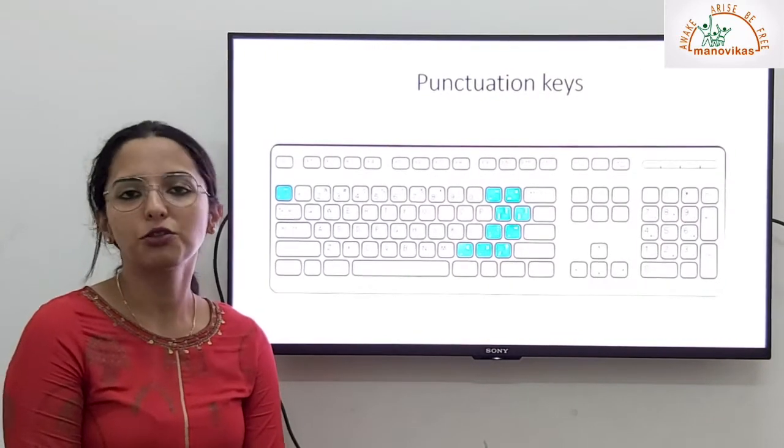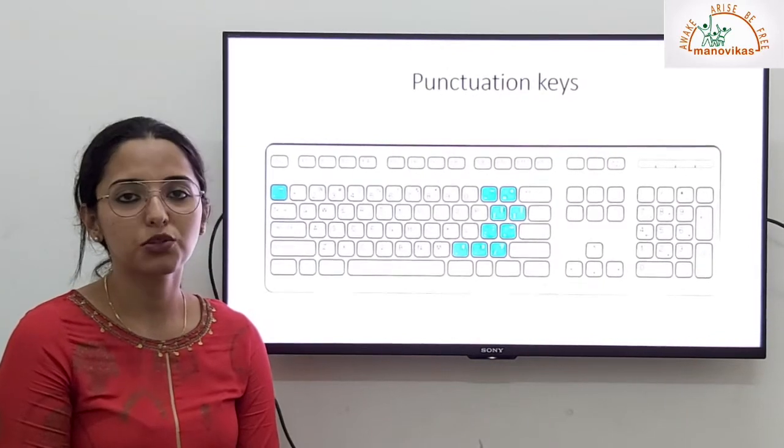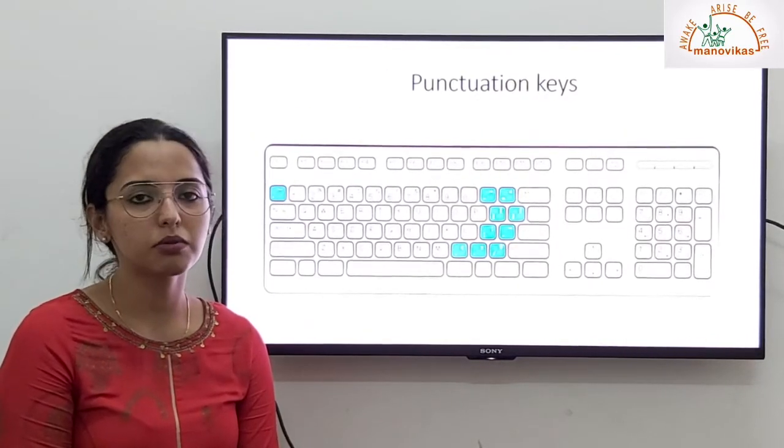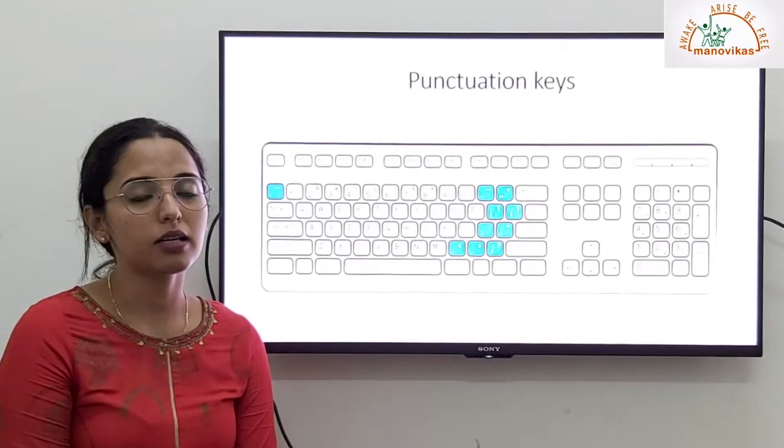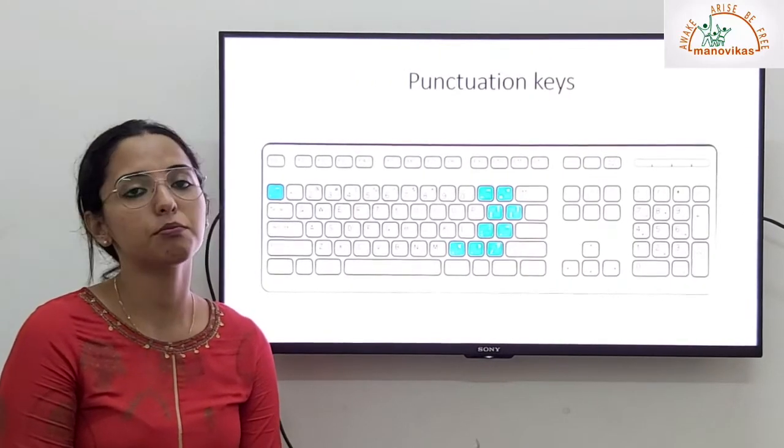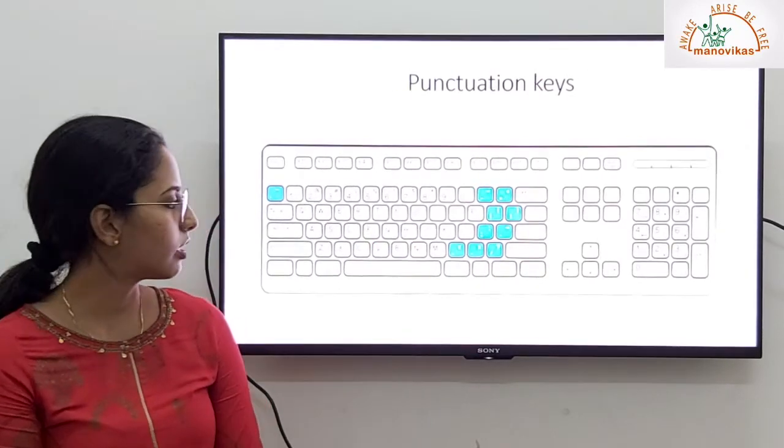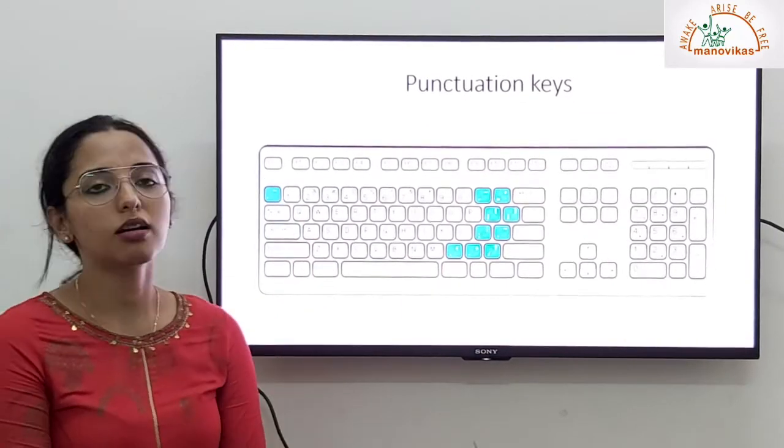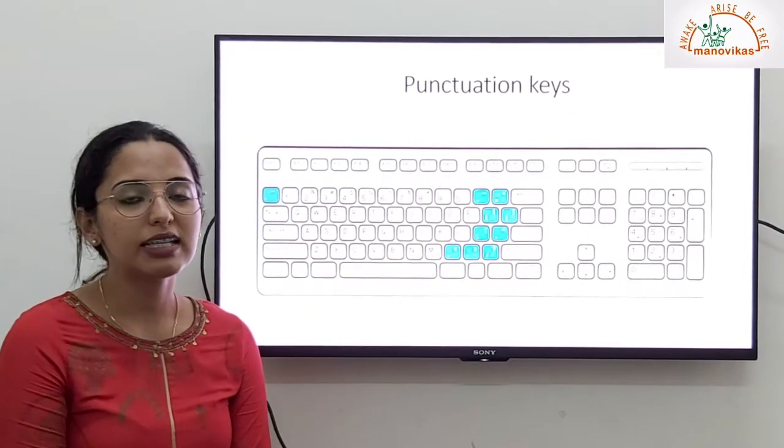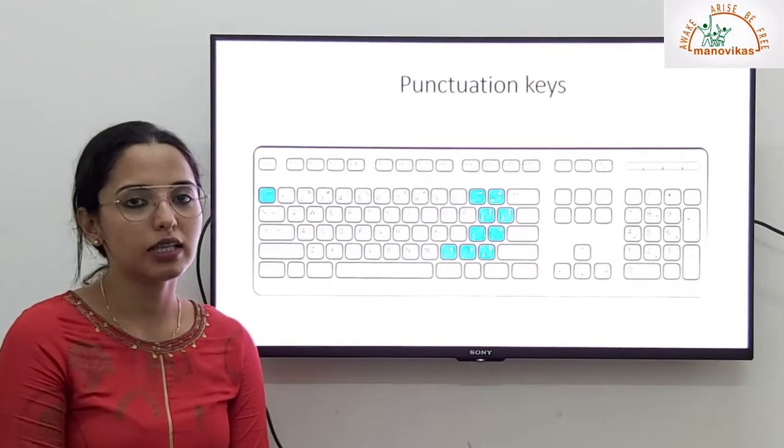Then we have punctuation keys. What are punctuations? Punctuation marks are those symbols that are used in the sentence. They help us to understand the sentence better. So the different punctuation keys are you have commas, full stop, question mark, exclamation mark. So all these are the punctuation keys on the keyboard.